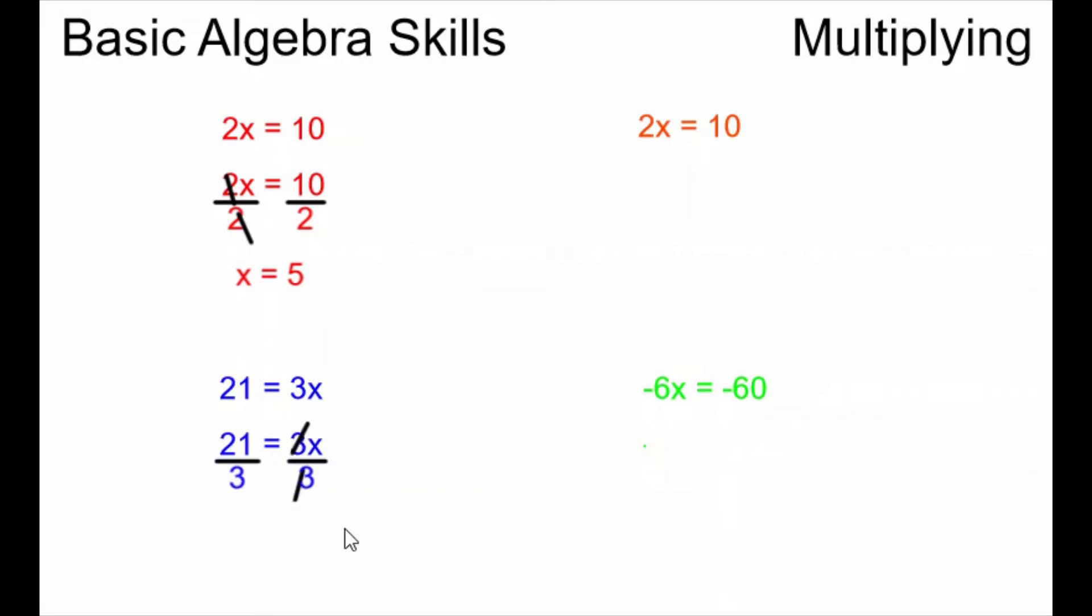These 3's cancel. x is alone on the right side of the equals and 21 divided by 3 is 7. So we have the statement 7 equals x which might seem a little backwards but we're able to write any equation backwards when we want. So we just turn 7 equals x into x equals 7 by writing it backwards and we have our answer.